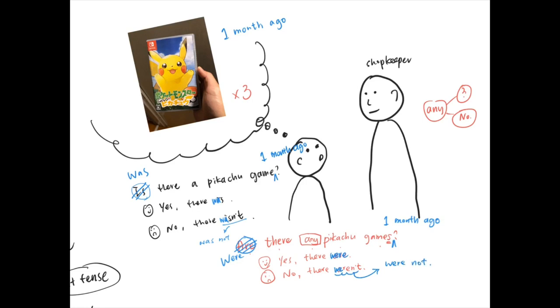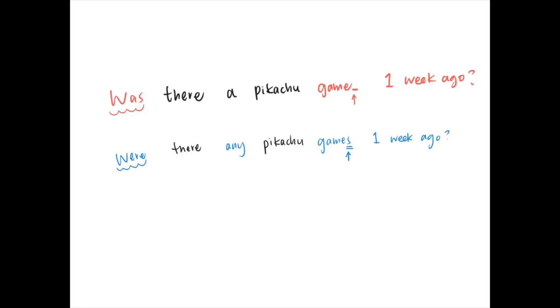Alright. Very simple, right? So in this video we learn about two kinds of questions. Was there a Pikachu game one week ago? Where you talk about one thing only, then you need to use was. Okay? And also, were there any Pikachu games one week ago? When we have more than one, then we use were. Okay? That is just this simple.